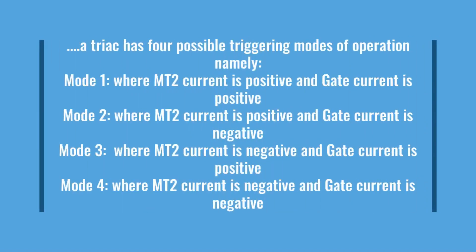Therefore, a TRIAC has four possible triggering modes of operation: Mode 1, where MT2 current is positive and gate current is positive; Mode 2, where MT2 current is positive and gate current is negative; Mode 3, where MT2 current is negative and gate current is positive; and Mode 4, where MT2 current is negative and gate current is negative.